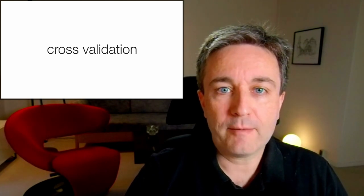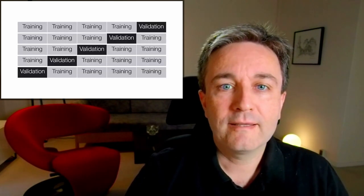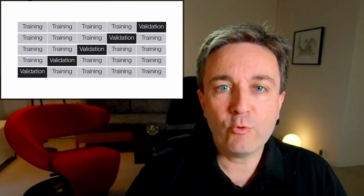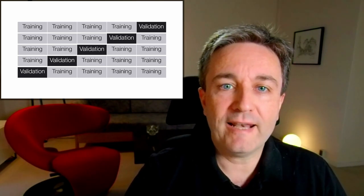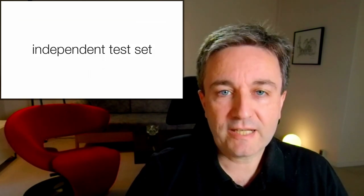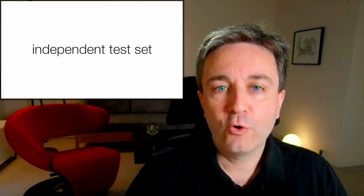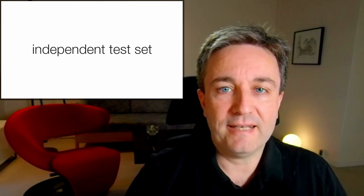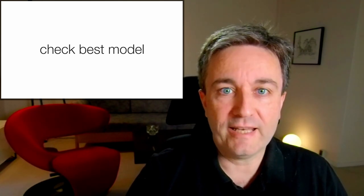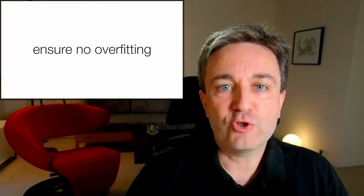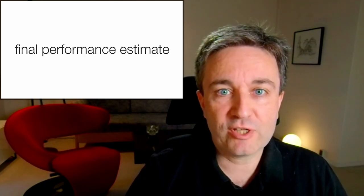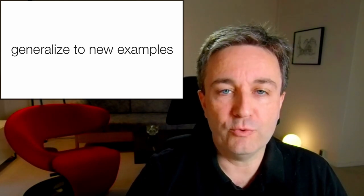In the validation step, you can use an approach called cross-validation — you split, for example, your data into five different partitions, and in a round-robin fashion, use all the data to validate the models predicted on the other parts of the data. Regardless of whether you have a single validation set or do cross-validation, you need an independent test set. This set is used to check the best model selected based on the validation set, ensure no overfitting, and get final performance estimates that tell you how well the model will generalize to new examples.